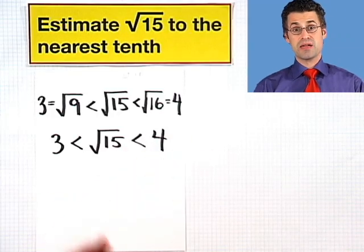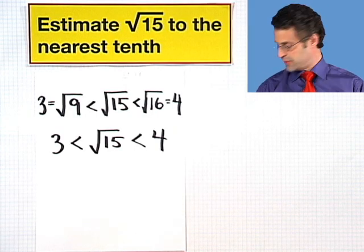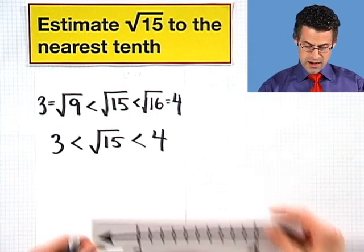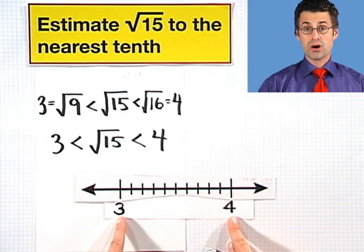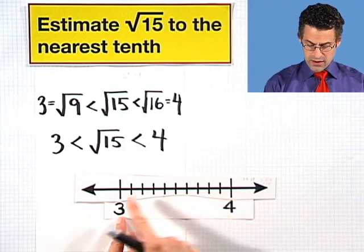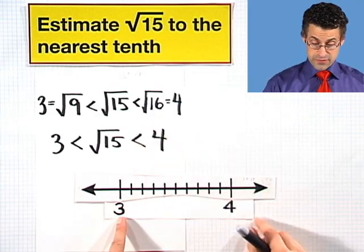And now the question is, can I approximate it a little bit better, because I'm looking for an estimate to the nearest tenth. So if we sort of zoom in on a number line, here's what we see. Here's 3, here's 4, and I've got to figure out where in this grid are we?